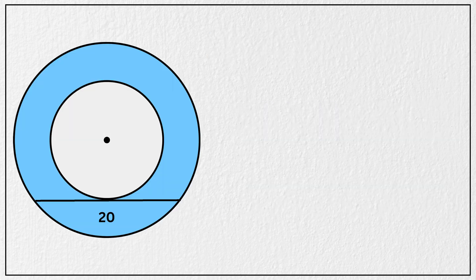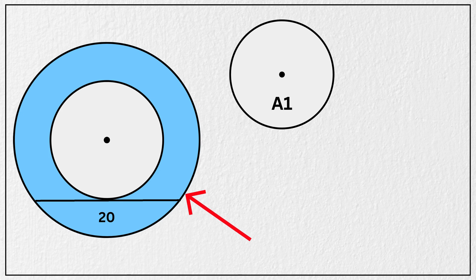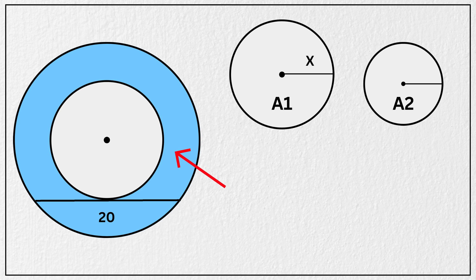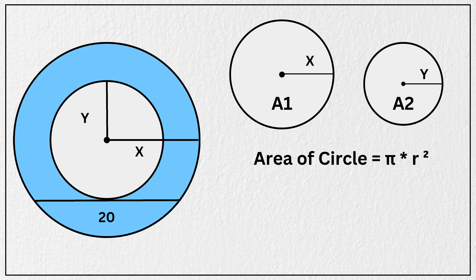Now let's define area of the outer circle as a1 and its radius as x, and area of the inner circle as a2 and its radius as y. So we have this length as x and this length as y. We know that area of any circle is given by the formula pi times radius squared. Thus we have a1 equal to pi times x squared, and a2 equal to pi times y squared, correct?